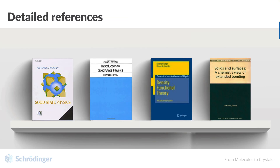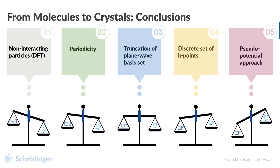A last look at our general scale indicates that these approximations help us solve a complex computational problem. Of course, this video is not a rigorous introduction to all of the theory behind periodic quantum mechanical calculations. Outside of this course, a detailed description of the theory can be found in many textbooks. Hoffman offers a didactic overview of solid-state modeling in 'Solids and Surfaces: A Chemist's View of Extended Bonding.' In this video, we introduced the five major approximations which are utilized in periodic quantum mechanical calculations: DFT, lattice periodicity, truncation of the expansion of the wave function, a discrete set of k-points, as well as the pseudopotential approach. In the next video, we'll discuss the application of this method. See you there.